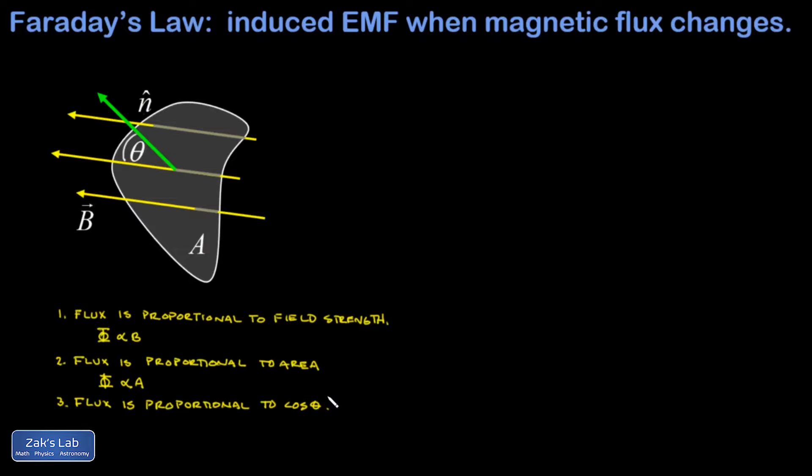When that angle theta is zero, the normal vector points in the same direction as the magnetic field. In other words, the surface is perpendicular to the magnetic field lines and will capture the maximum amount of field lines. If we put these three proportionalities together, we get the correct definition for magnetic flux.